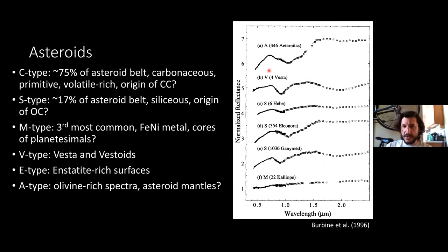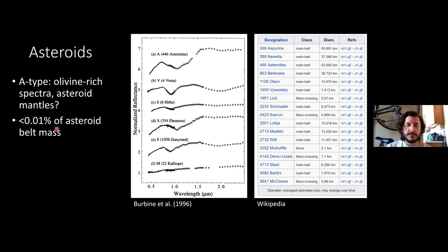E-type asteroids are potentially representative of enstatite chondrite-rich material. A-type asteroids would represent the olivine-rich materials of asteroid mantles. These are diagnosed based on absorption patterns from ground-based observations. The A-types have this characteristic shape indicative of a lot of olivine-rich material. Yet less than 0.01% of the asteroid belt is composed of A-type materials.